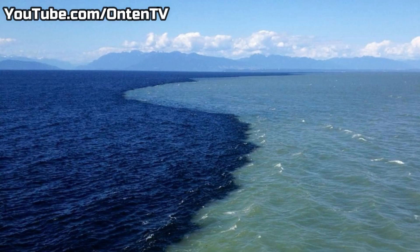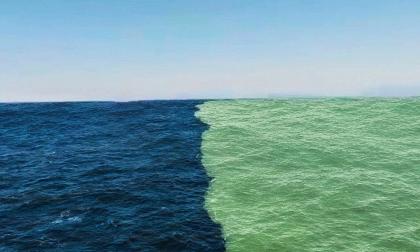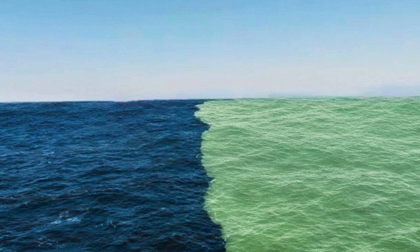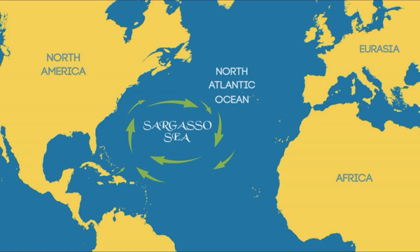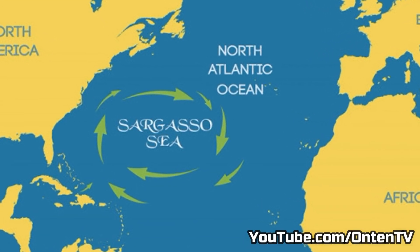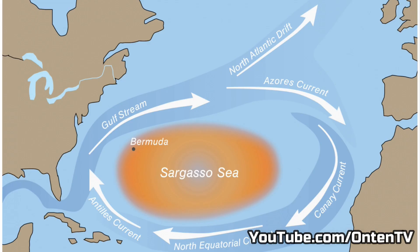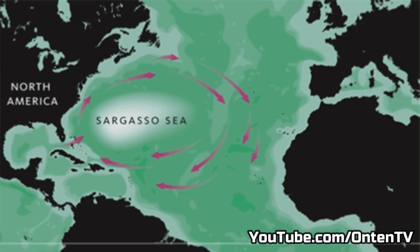Don't think it's just the oceans that have different types of water — many different places in the world have these water borders. One cool example is found in the North Atlantic Ocean: a sea called the Sargasso Sea. The Sargasso has created a border and separated itself from the Atlantic, but here it's not because of salt content. The Sargasso Sea is warmer than the surrounding ocean, so it's temperature that's making the difference.